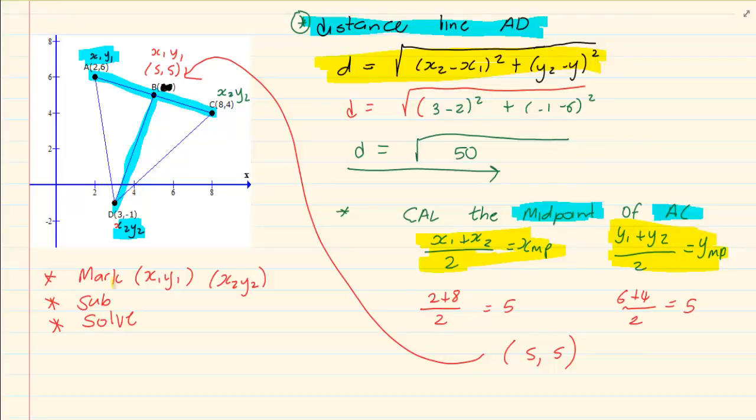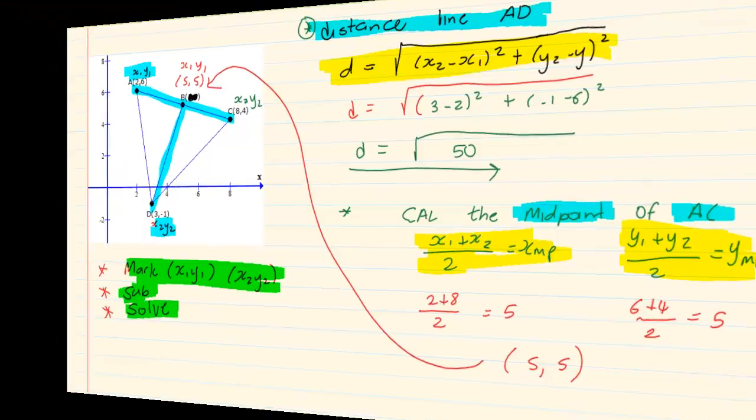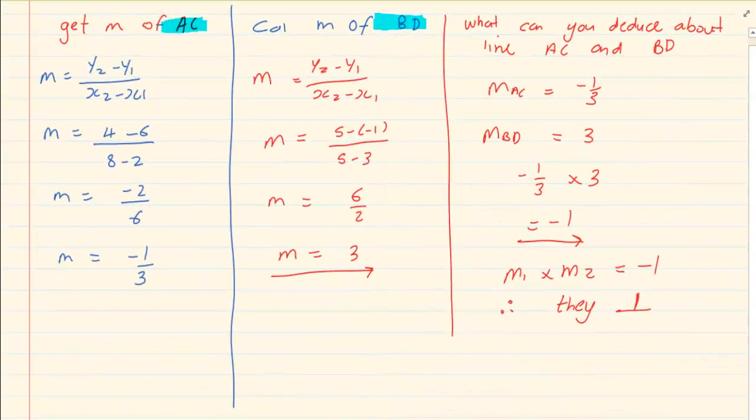At all times we are basically using the same three rules. You are going to mark your x1, y1, x2, y2. Then we are going to substitute into the correct formula and at the end we are going to solve. The next thing we learned was the gradient. The formula for the gradient is m is equal to y2 minus y1 over x2 minus x1. What we also know is that m1 times m2 is equal to negative 1 would mean that the two lines are perpendicular. They are 90 degrees to each other.